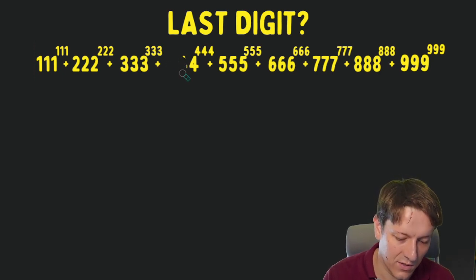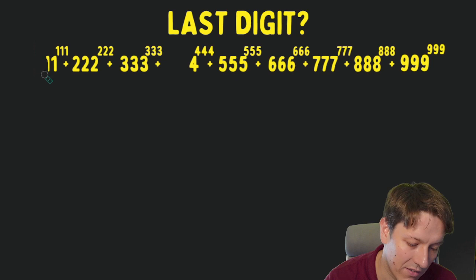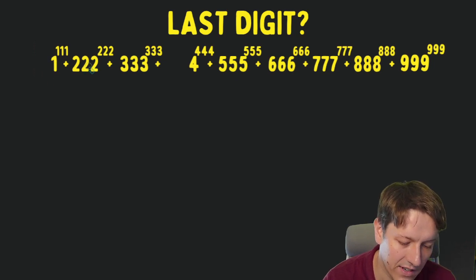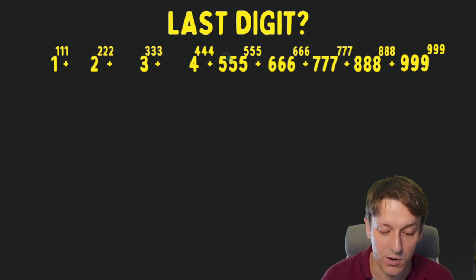That gives us a nice simplification. I can just get rid of the first two 4s in this problem, and I haven't changed the last digit of the answer at all. By exactly the same argument, I can also get rid of the first two digits of all of the other numbers here. So I'm just looking at 1 to the 111 plus 2 to the 222 plus 3 to the 333, and so on.